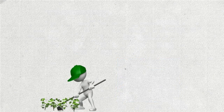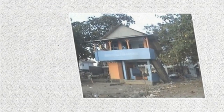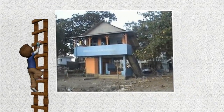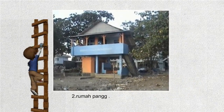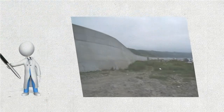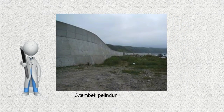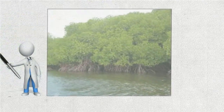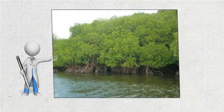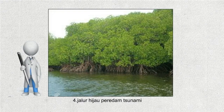1. Tsunami early warning system. 2. Rumah panggung aman tsunami. 3. Tembok pelindung tsunami. 4. Jalur hijau peredam tsunami. B. Rencana evakuasi, yaitu usaha atau tindakan penyelamatan saat bencana terjadi sehingga kegiatan tersebut harus sudah ada persiapan sebelumnya.